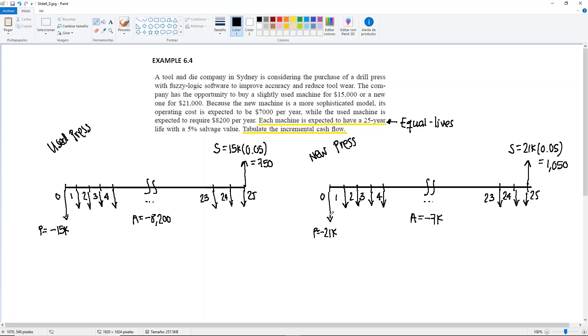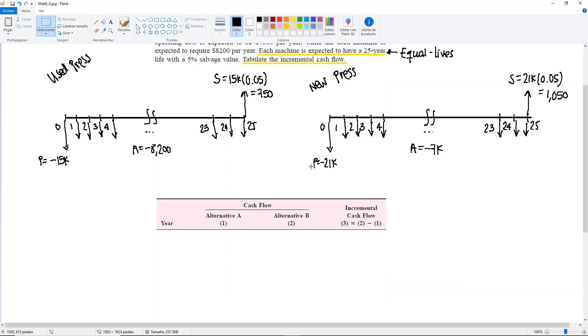I'll guide myself with the columns. We are going to be listing the years. But the good news is that when you have equal lives, you can take a shortcut. Let's start with year 0, and also, let's list our alternative A and B.